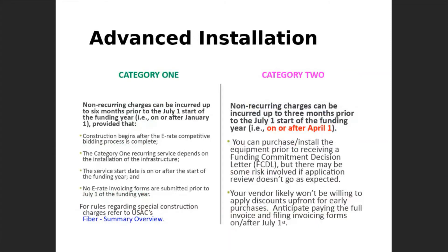For category one, if you're setting up a new fiber internet service, the installation work can occur up to six months before the funding year begins, but you can't invoice any discounts for that advanced installation until the funding year begins on July 1st. For category two, the early purchase period begins April 1st prior to the funding year, and a late installation option goes through September 30th following the end of the funding year. If you opt for early purchase, anticipate paying the full invoice amount and waiting until at least July 1st to file a BEAR form for reimbursement.